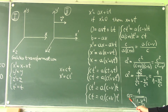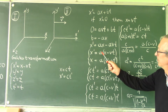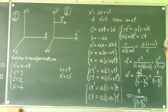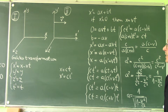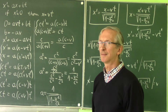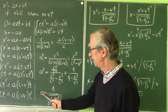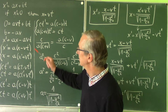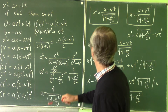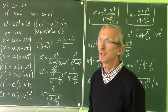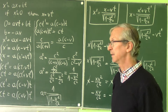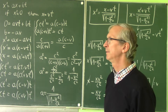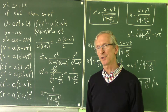Now we put this constant into both equations to obtain the transformations of coordinates x and x'. Substituting the value of constant A into both equations gives us the Lorentz transformation for coordinate x and its inverse transformation. Now we only have to find the transformation of time.